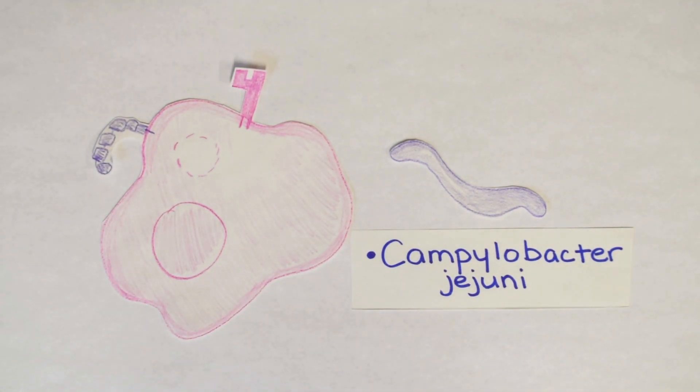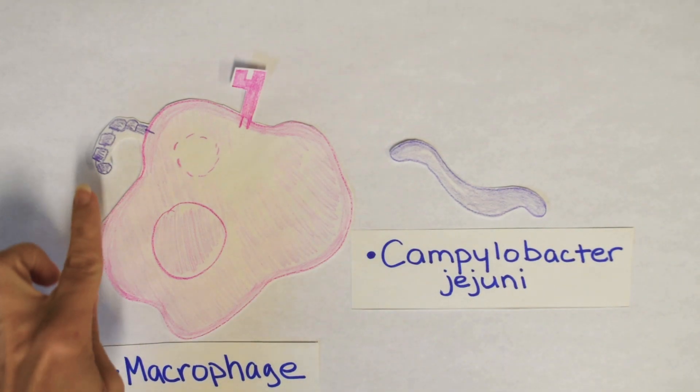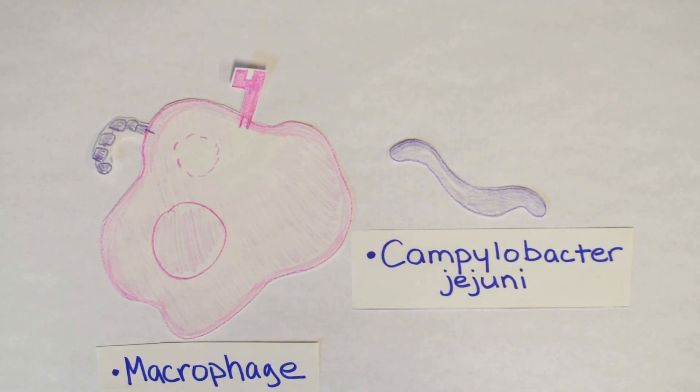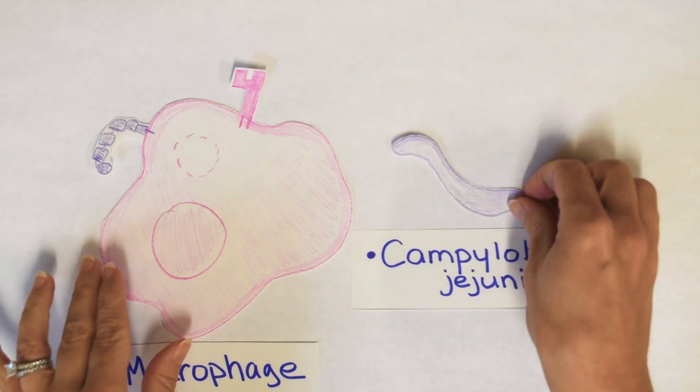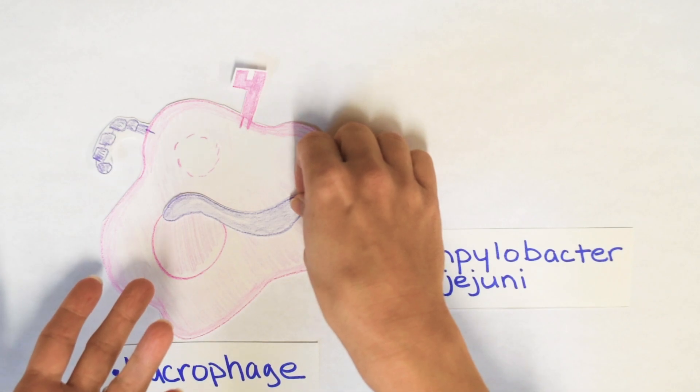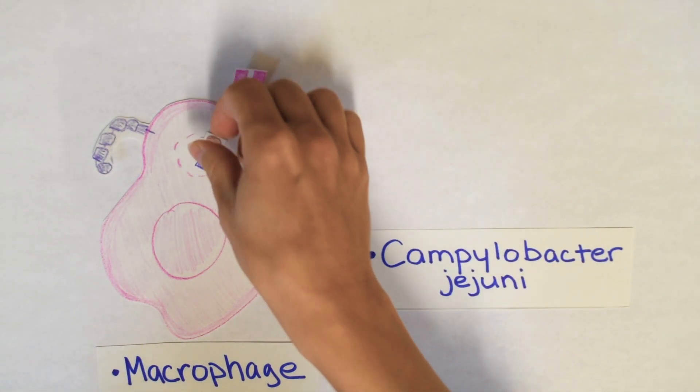Now your immune system knows how to fight bacteria, so here comes one of your innate immune cells called the macrophage. The macrophage is a pretty powerful cell. They have receptors to identify bacteria and then to present bacteria. So it can come along, literally eat the bacteria, and break it down into small proteins.